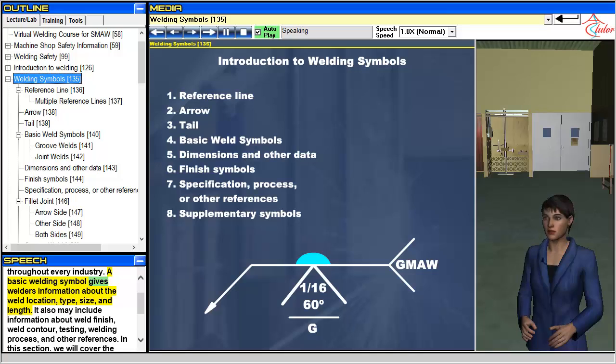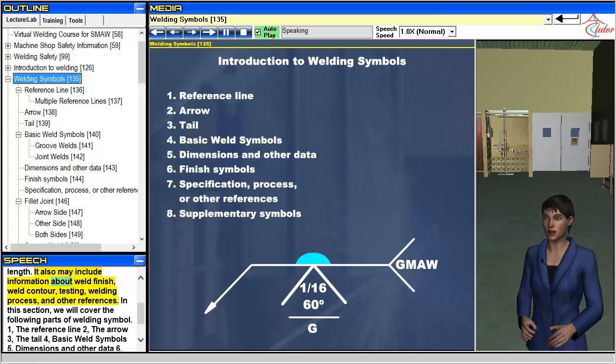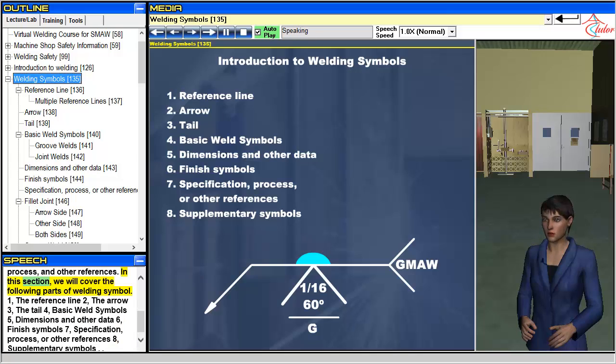A basic welding symbol gives welders information about the weld location, type, size, and length. It also may include information about weld finish, weld contour, testing, welding process, and other references. In this section, we will cover the following parts of welding symbols.